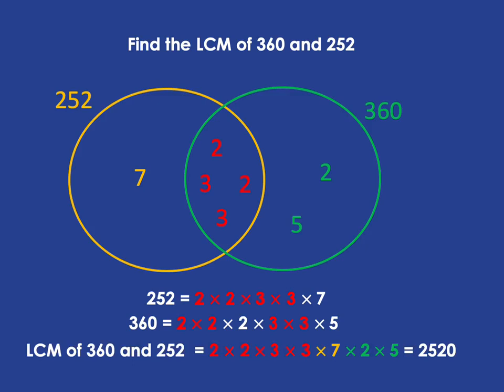So 2 times 2 times 3 times 3, and then the 7 of the 252, and then the 2 and the 5 of the 360. So absolutely everything that is in that picture. And if you multiply all those together, it comes to 2520, which is the lowest common multiple of 252 and 360.